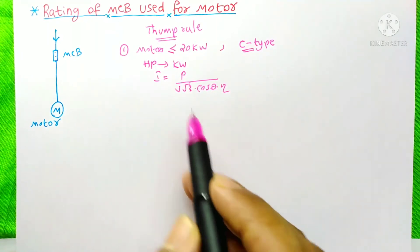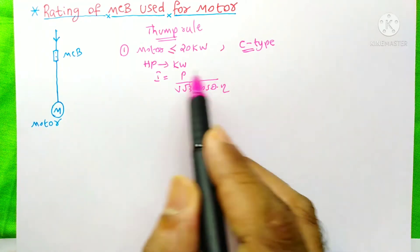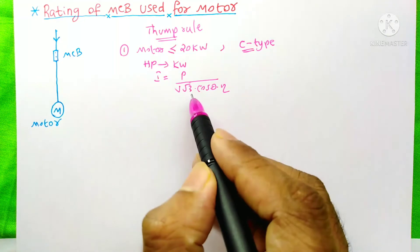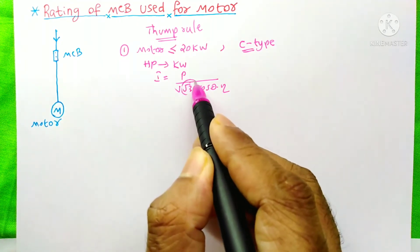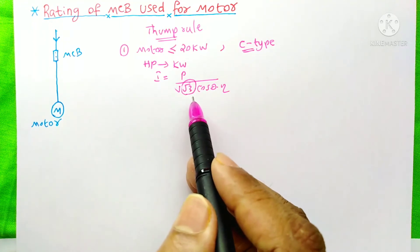To select an MCB, first you need to find the current for the motor. If it is a three-phase motor, then you use this equation. If it is single-phase motor, then you need to avoid this root 3 and find the current and then select a suitable MCB with a C-type.